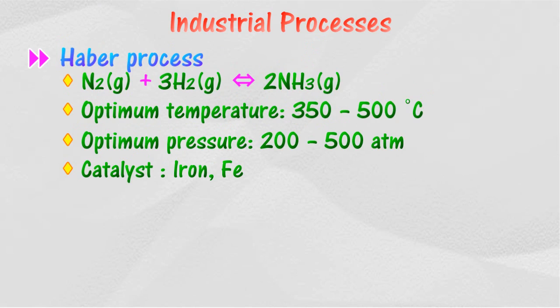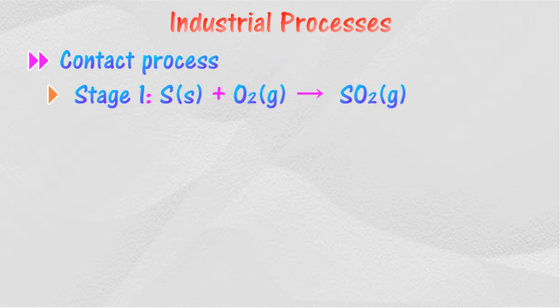In the production of ammonia by the Haber process, nitrogen is unreactive, so iron powder is used as a catalyst to make nitrogen react with hydrogen to produce ammonia at a temperature between 350 to 500 degrees Celsius and 200 to 500 atmospheric pressure.